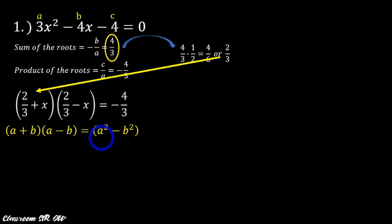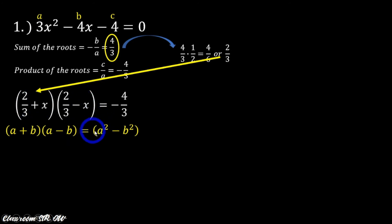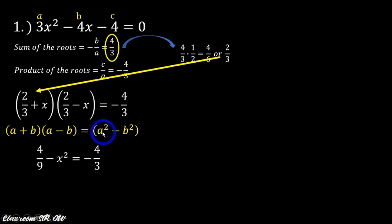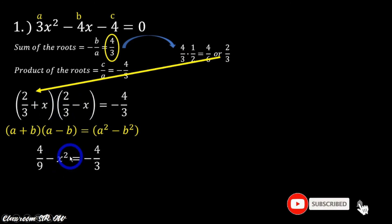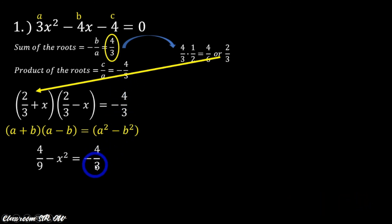This is just equivalent to the difference of two squares: (A + B)(A − B) = A squared minus B squared. So (2/3)² minus x² equals negative 4 over 3. That gives us 4 over 9 minus x squared equals negative 4 over 3, which is our product of the roots.